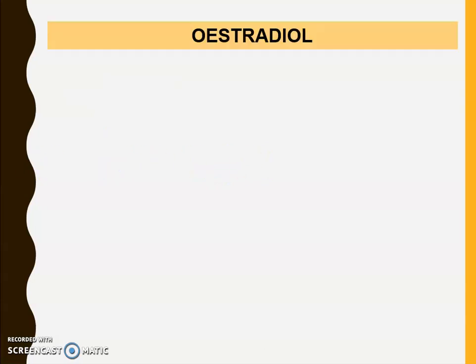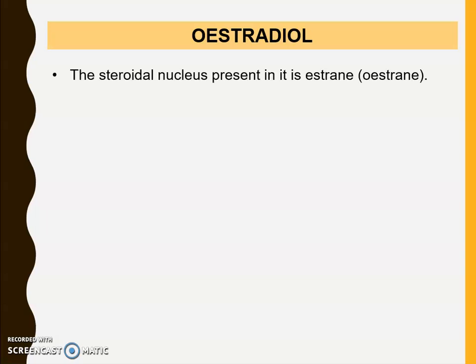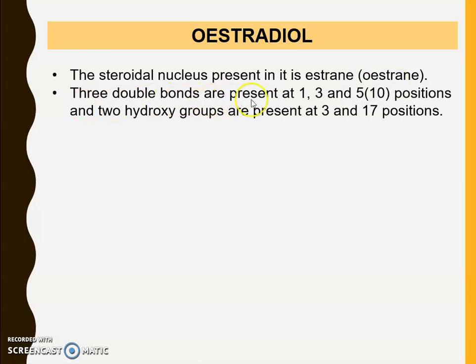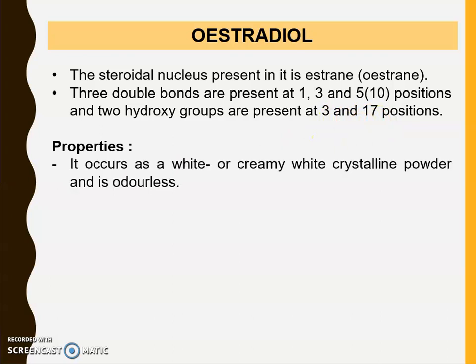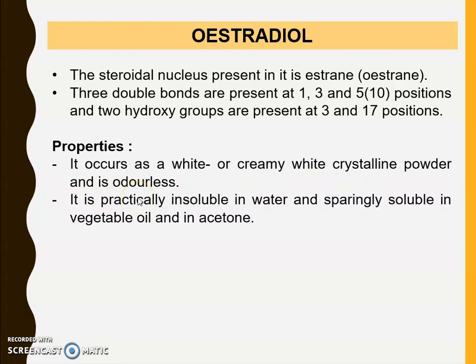The next drug is Estradiol, mainly a female hormone. The steroidal nucleus present in it is estrane. Three double bonds are present at positions 1, 3, and 5, and two hydroxy groups are present at positions 3 and 17. Properties: it occurs as a white or creamy white crystalline powder and is odorless. It is practically insoluble in water and sparingly soluble in vegetable oil and acetone.